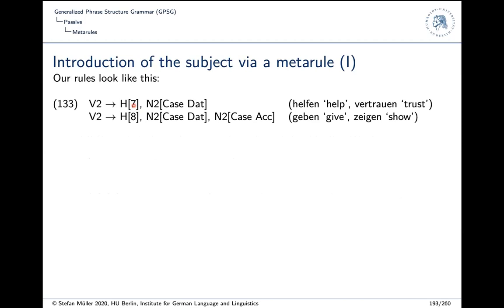I'll first explain meta-rules with respect to subject introduction, then return to the passive. Until now our rules look like V2 rules — for example, something with SUBCAT number 7 taking a dative object and licensing a VP. There is no mention of a subject. So how do we analyze sentences with a subject, as opposed to infinitival verb phrases?